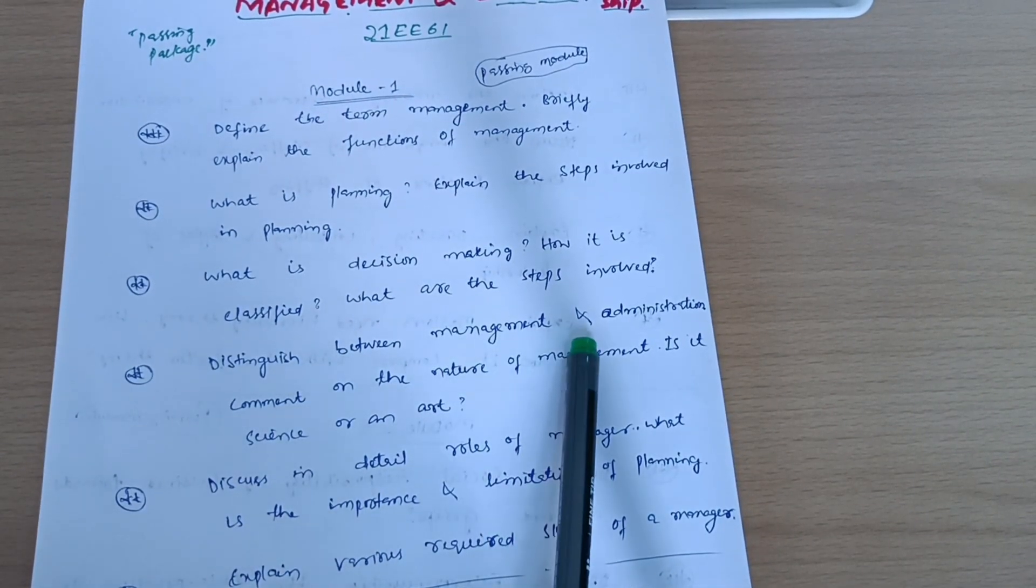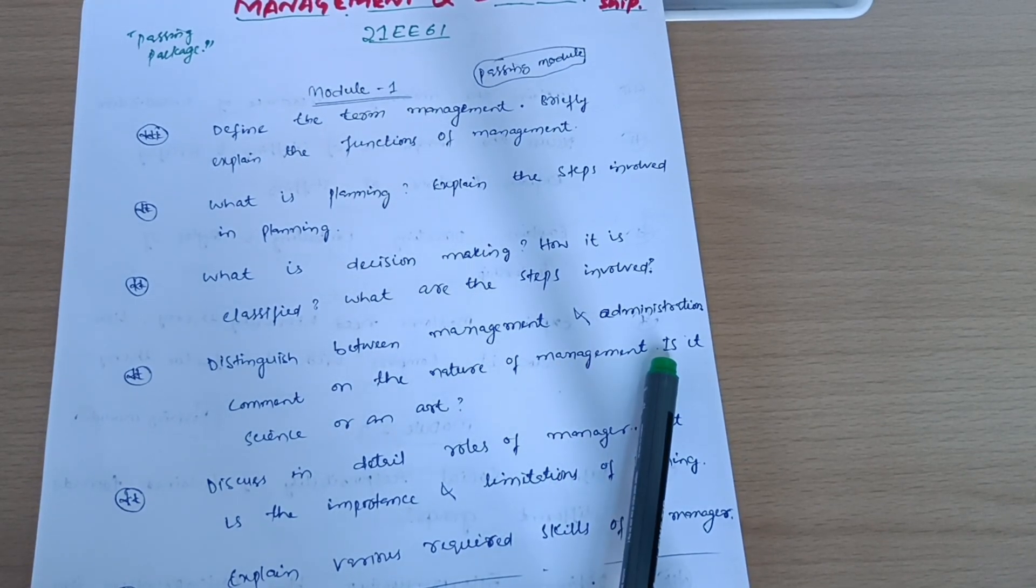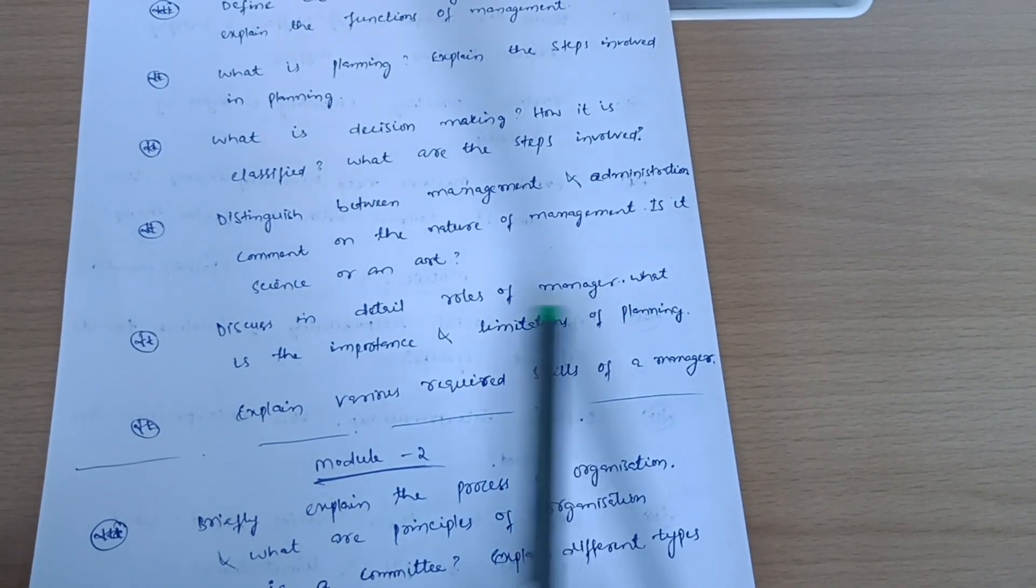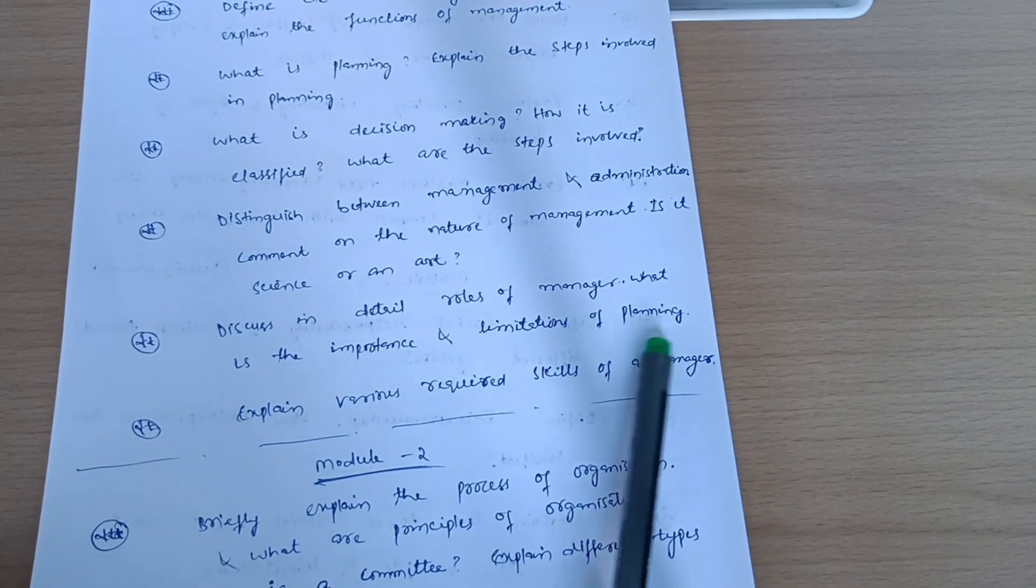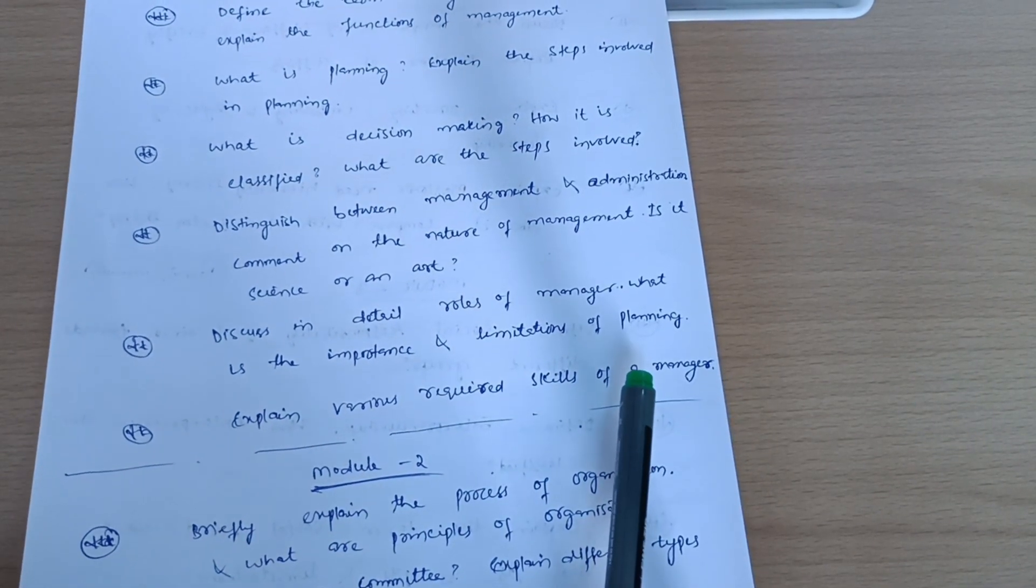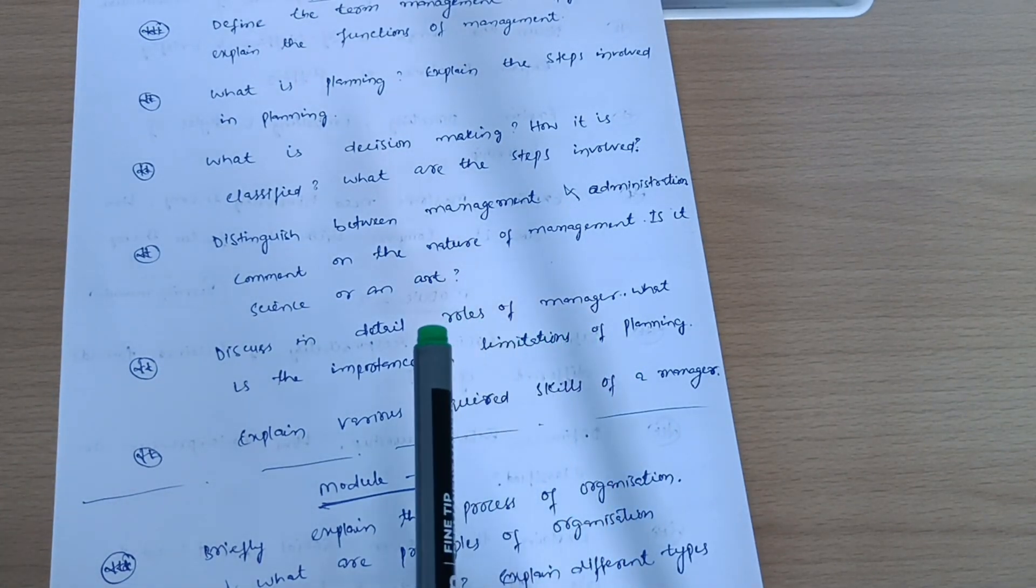What is decision making? How it is classified? What are the steps involved? Distinguish between management and administration. Comment on the nature of management, is it a science or an art? And discuss in detail roles of manager. What is the importance and limitations of learning? Expand various required skills of a manager.